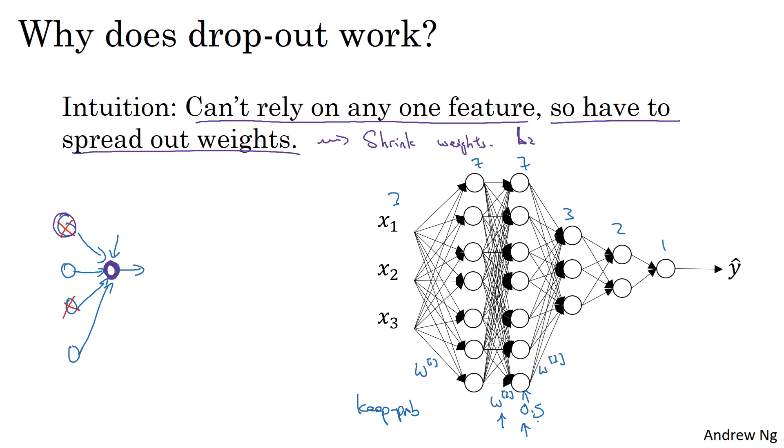Whereas for different layers where you might worry less about overfitting, you could have a higher keep_prop. Maybe this is 0.7, maybe this is 0.7.